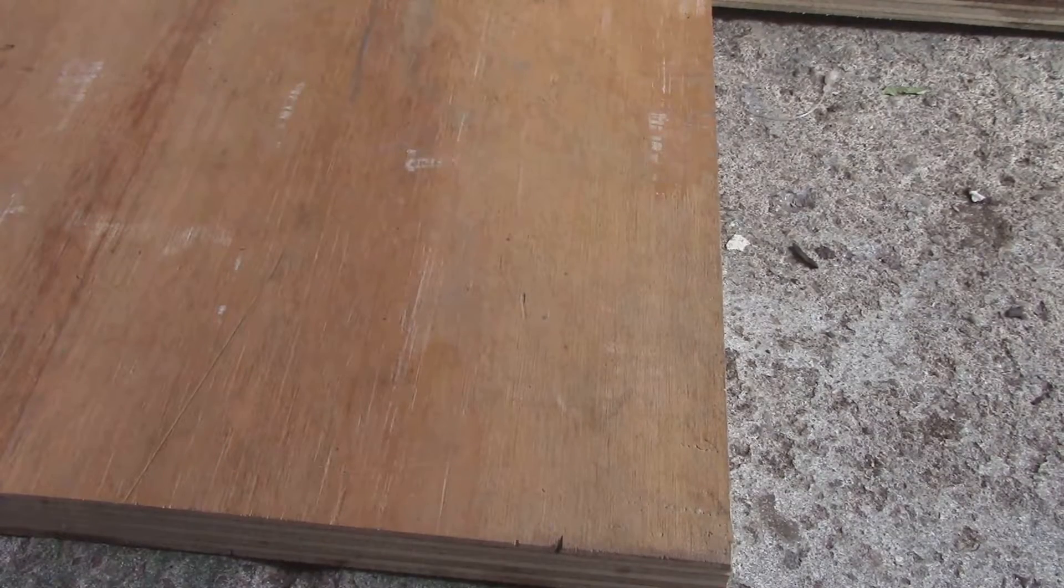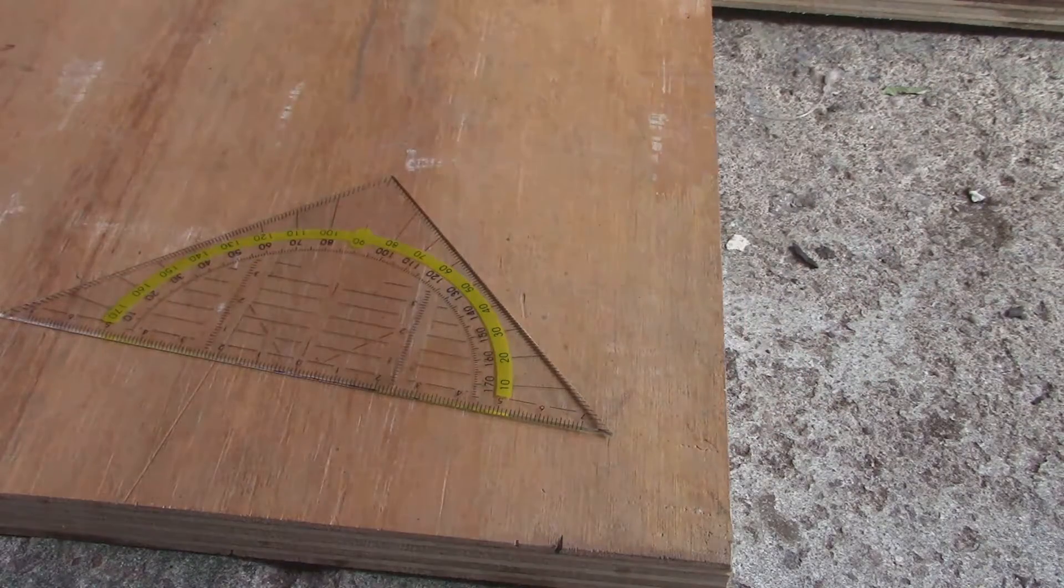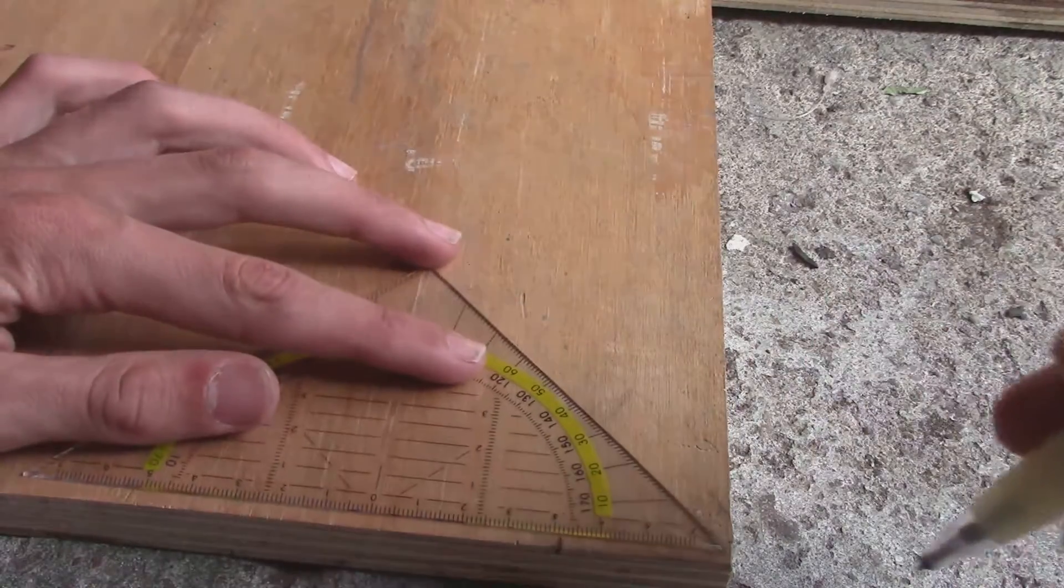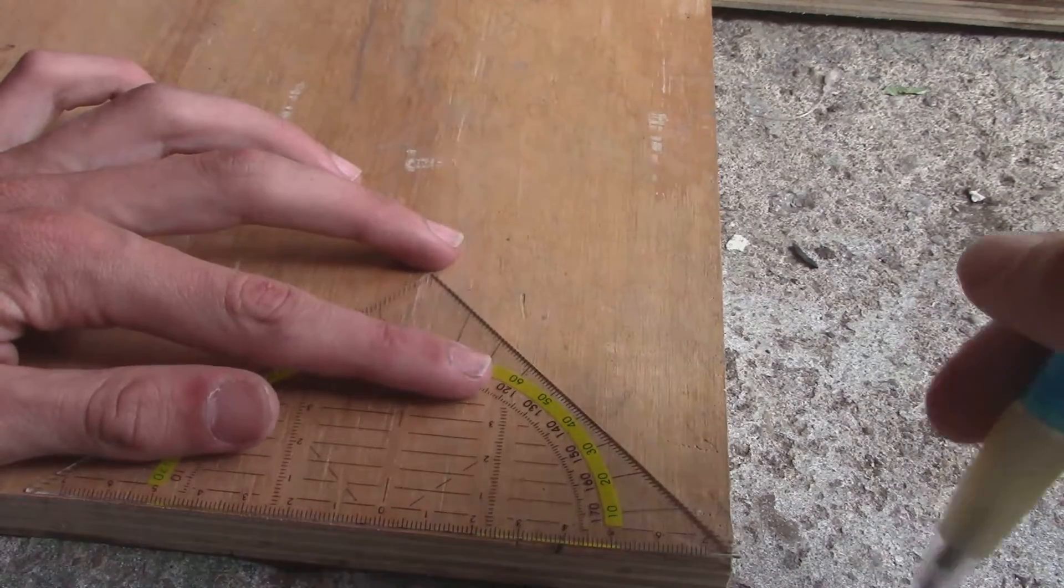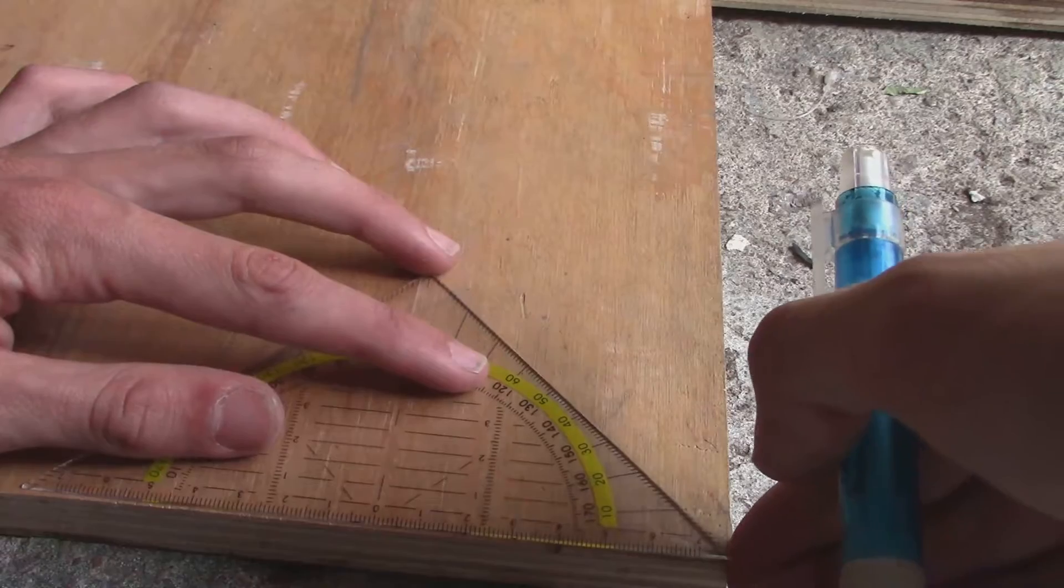The first thing we need to do is cut a perfect triangle out of this piece of wood. All the sides of the triangle need to have the same length and all the angles need to be 60 degrees exactly.